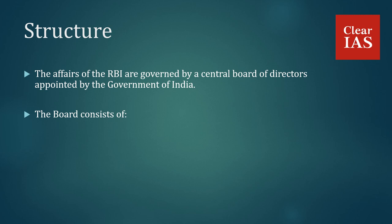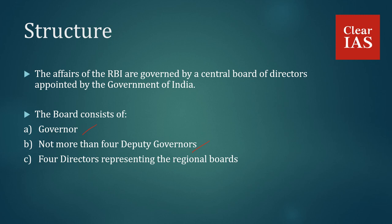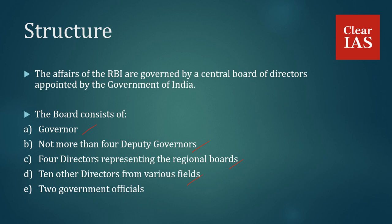The board consists of a governor, not more than four deputy governors, four directors representing the regional boards, ten other directors from various fields, and two government officials.